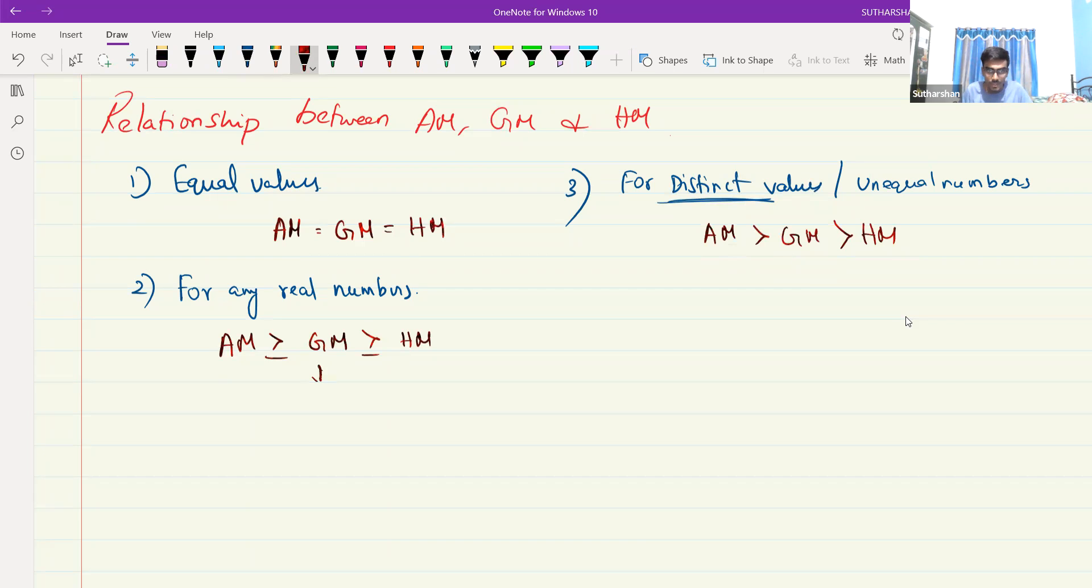This, you can write it in another way also. HM is less than equal to GM, GM is less than or equal to AM. This, you can write it in another way also. HM is less than GM, GM is less than AM.